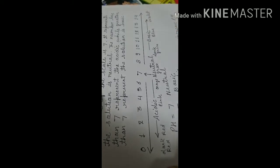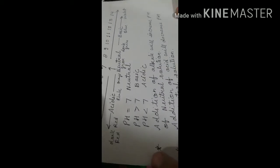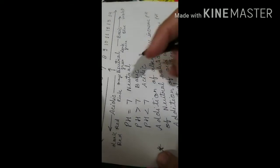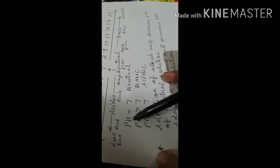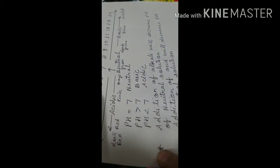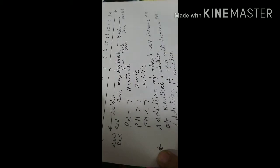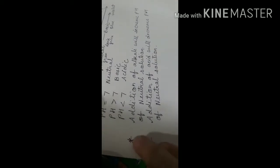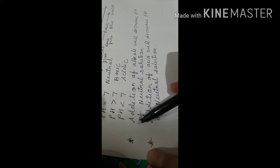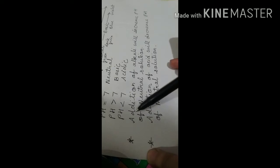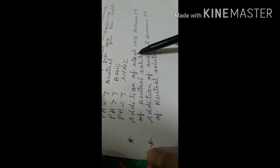To summarize: if the pH value is equal to 7, the solution is neutral; if it is greater than 7, the solution is basic; and if it is lesser than 7, the solution is acidic.